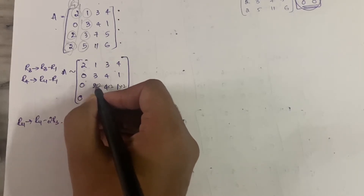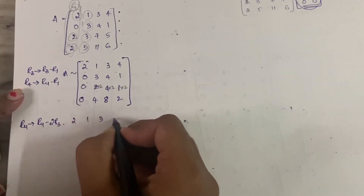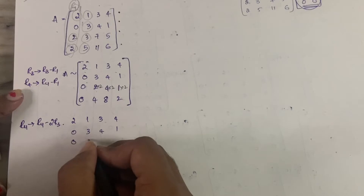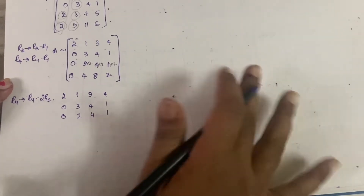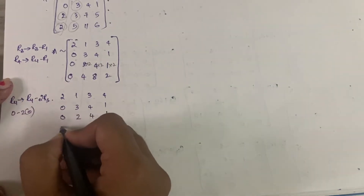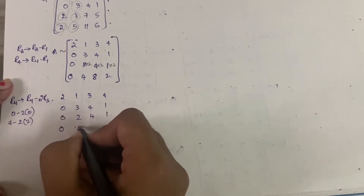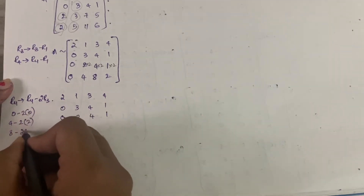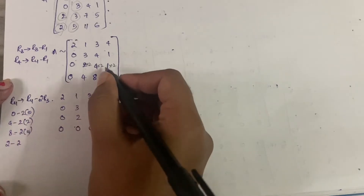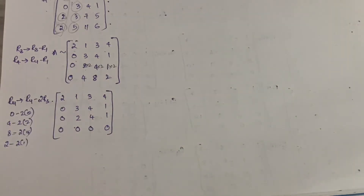R1, R2, R3 remain the same: 2,1,3,4 | 0,3,4,1 | 0,2,4,1. For R4: 0−2×0=0; 4−2×2=0; 8−2×4=0; 2−2×1=0. So the entire fourth row becomes zero.